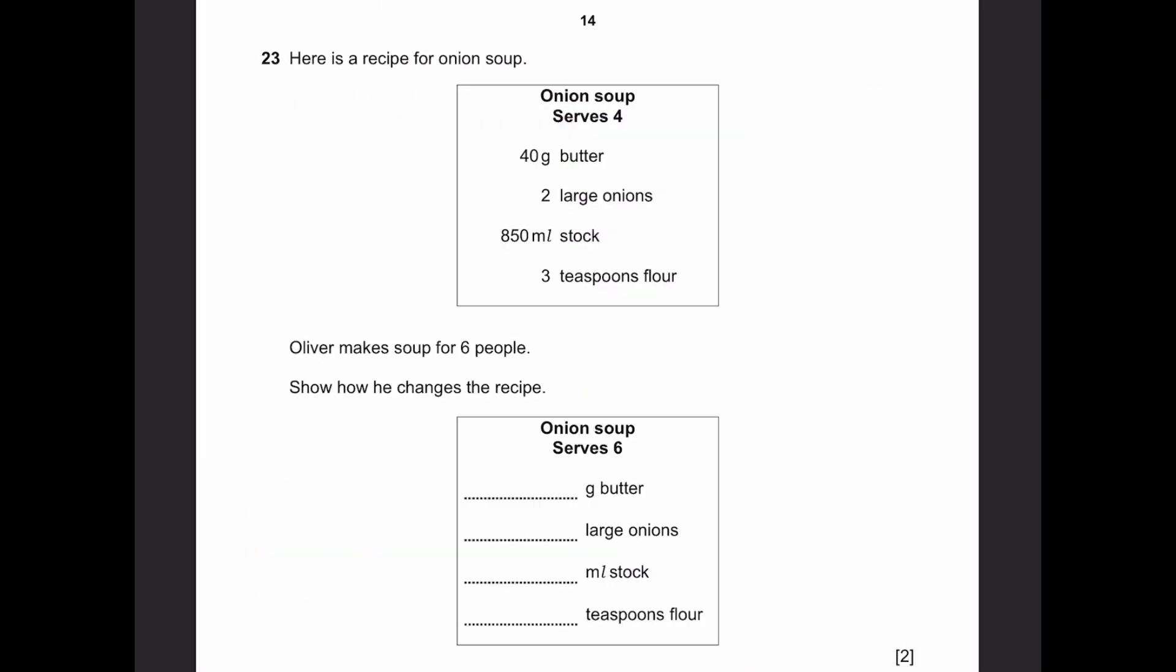Let's go over to question 23. Here's a recipe for onion soup. Oliver makes soup for 6 people. Show how he changes the recipe. So this one serves 4 people. So 6 people means if we multiply 4 by 6 by 4 or multiply by 3 by 2, we get 6 people. So we multiply all of this by 3 by 2. So this will be 60 grams butter, 3 large onions, 1,275 milliliters stock, and 4 and a half teaspoons flour. That's the answer.